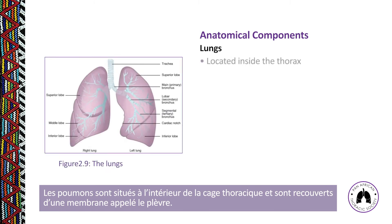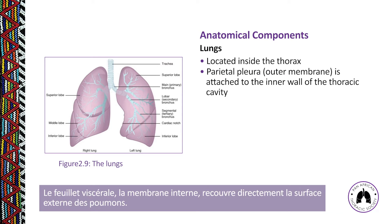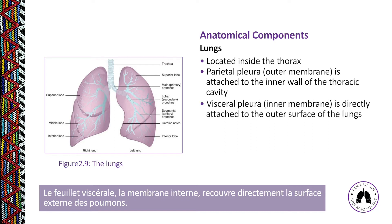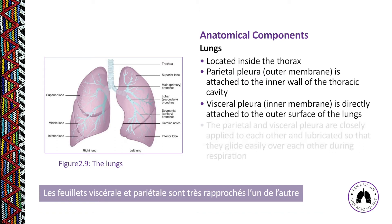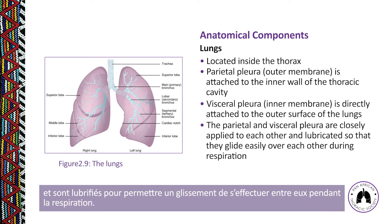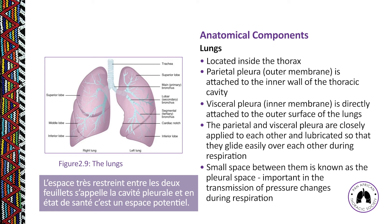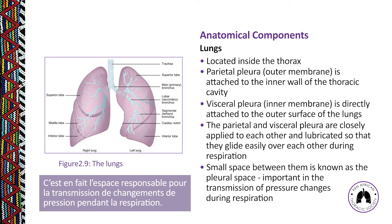The lungs are located inside the thorax and are surrounded by two membranes called the pleural membranes. The parietal pleura, the outer membrane, is attached to the inner wall of the thoracic cavity. The visceral pleura, the inner membrane, is directly attached to the outer surface of the lungs. They are closely applied to each other and lubricated so they glide easily during respiration. The small space between them is the pleural space, which in health is a potential space and is important for transmitting pressure changes during respiration.